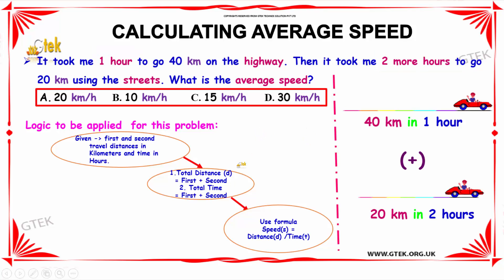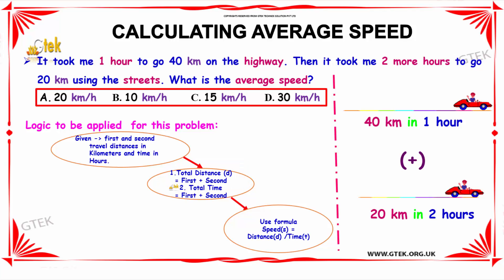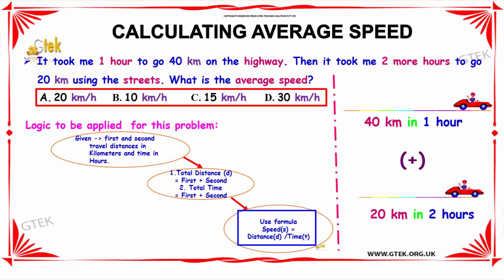Secondly, we have to calculate the total distance using the formula: total distance equals the first travel distance plus the second travel distance. We also have to find the total time using: first travel time plus second travel time. And lastly, calculate the average speed using the formula: speed equals distance divided by time.